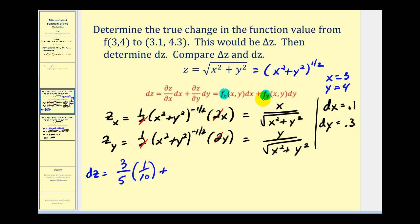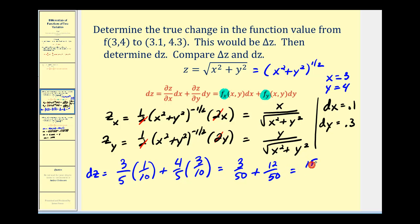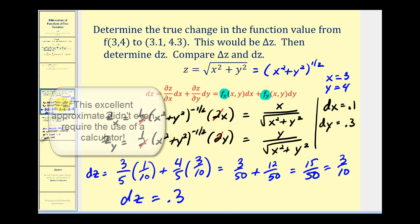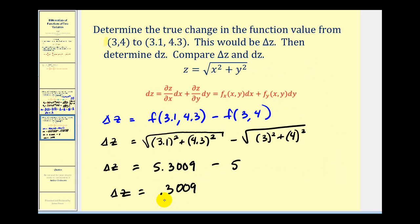Plus, evaluating the partial with respect to y at the point three, four: the numerator is four and the denominator is the square root of twenty-five or five, giving us four-fifths times dy, which is three-tenths. Evaluating this: three-fiftieths plus twelve-fiftieths equals fifteen-fiftieths, which simplifies to three-tenths. So differential z equals point three. The actual function value change was point three zero zero nine — a very good approximation.